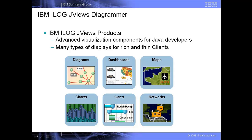This product line offers components for software developers. They are made of productivity tools and open APIs for building specialized user interfaces, such as charts and Gantt charts, maps, or diagrams and dashboards, or schematics. These components are designed for Java developers. They have been around for more than 10 years now, and selected by thousands of companies worldwide.